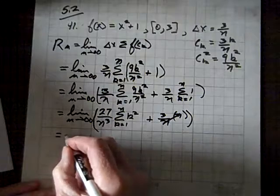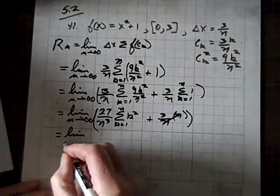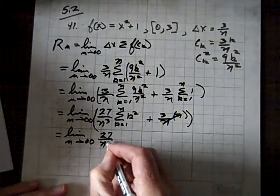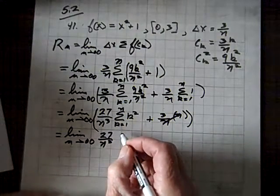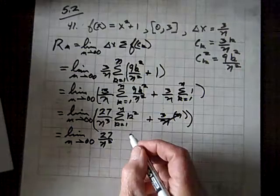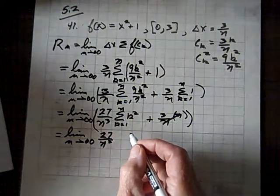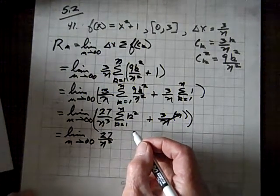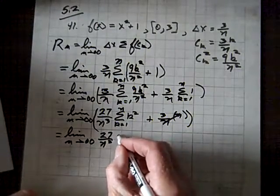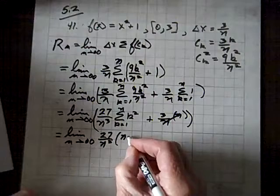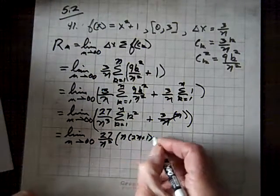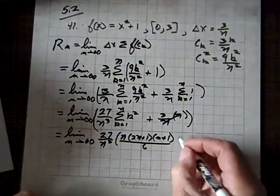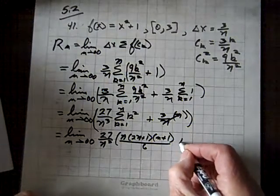Now, we have an identity for, by the way, I've got 27 over n cubed. We have an identity for the summation of k, k equals 1 to n of k squared. And that identity can be found on page 309. And it is n times 2n plus 1 times n plus 1, all over 6. And we still have this plus 3 out here.